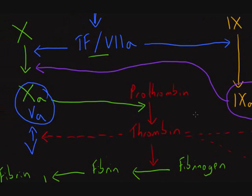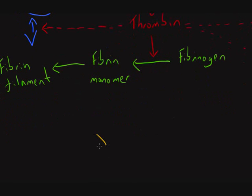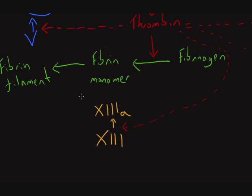The final action of thrombin I want to mention involves factor 13, also known as fibrin stabilising factor. Factor 13 is converted into activated factor 13 — and unsurprisingly, it is thrombin that does this. Activated factor 13 plays a role in stabilising the loose fibrin filaments, so it also has an important role in stabilising the clot.